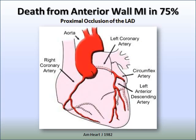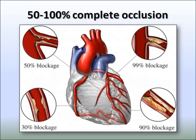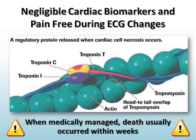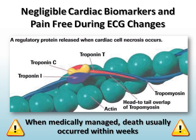75% of patients with these EKG changes ended up having death from an anterior wall MI or proximal occlusion of the LAD. When they looked at the coronary arteries, these patients had anywhere from 50 to 100% occlusion of their LADs. Cardiac enzymes typically showed no change or just a small bump — and most concerning is that when these patients were medically managed, they usually died within a few weeks of presenting with that EKG change.